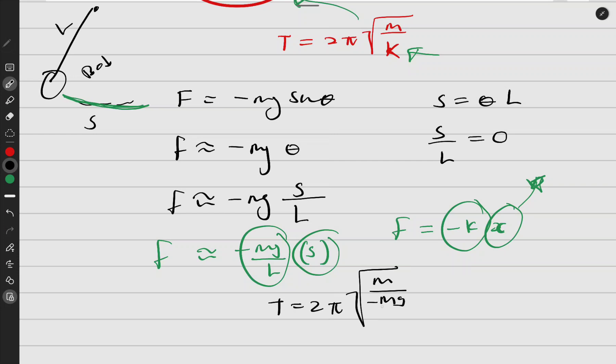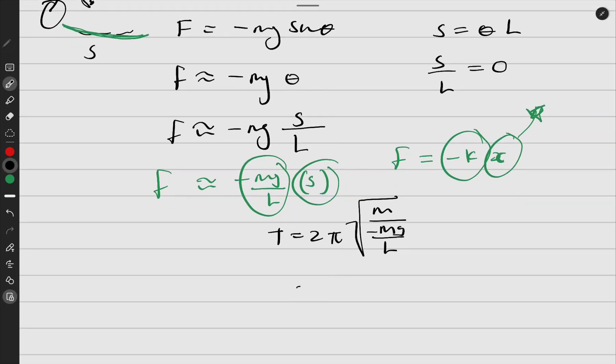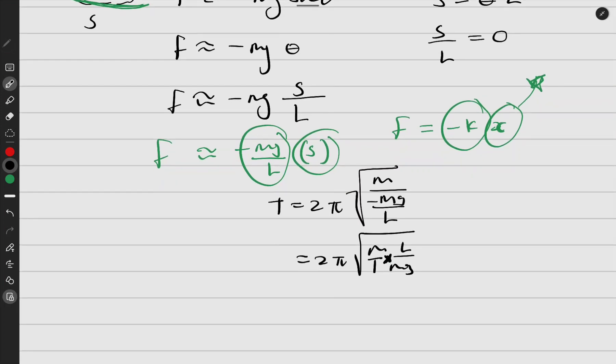If you flip the thing, you have m over one, flip it, L will be on top and mg will be on the bottom. You'll multiply these things here.